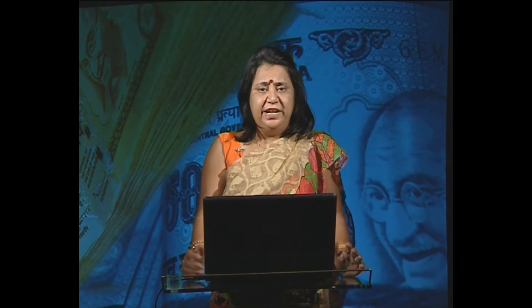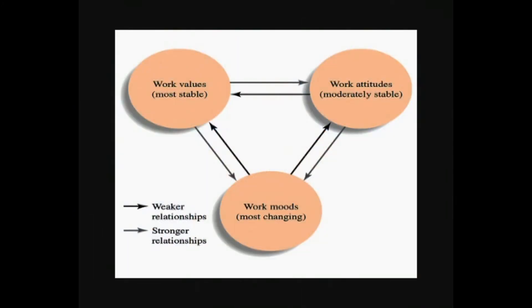It is very necessary to balance your values. The diagram shows work values, work attitudes, and work moods connected by arrows. If work values are stable, work attitudes are moderate, and work moods are not changing very fast, they give stronger relationships. Any imbalance in these three variables — values, attitudes, or moods — changes the total perception towards the job.